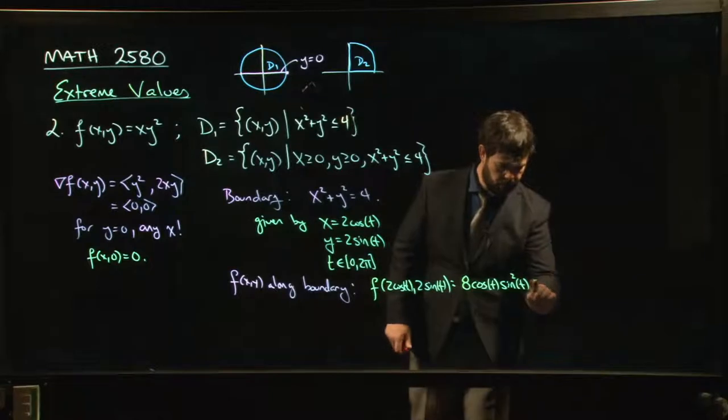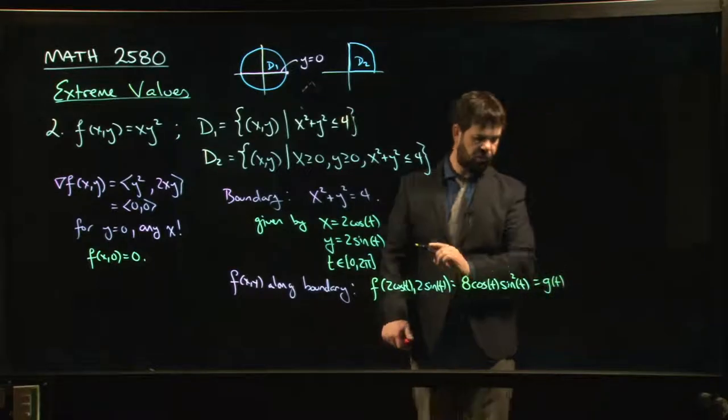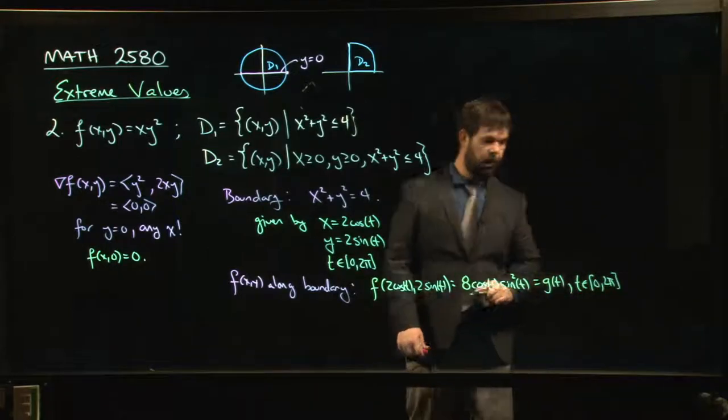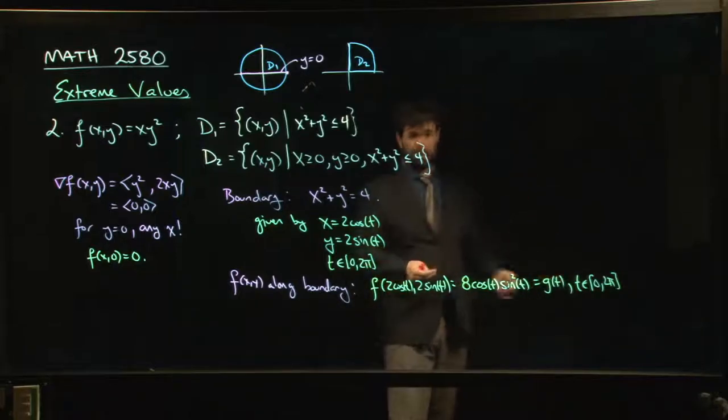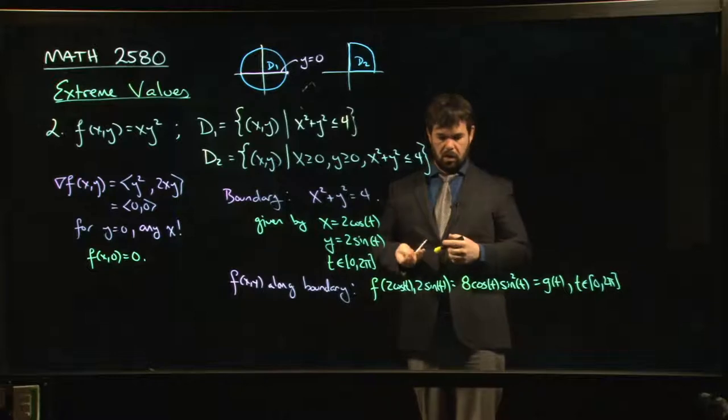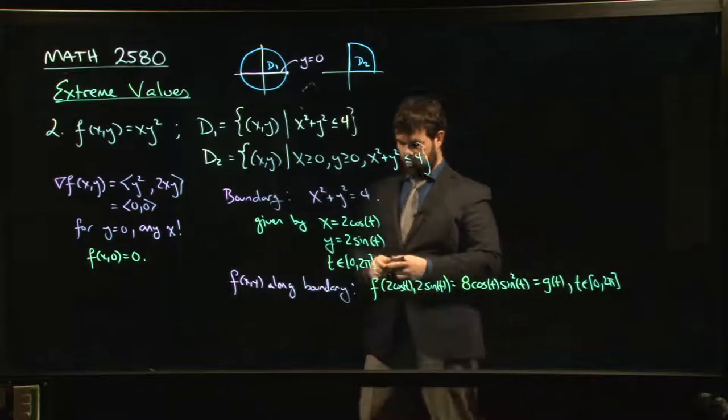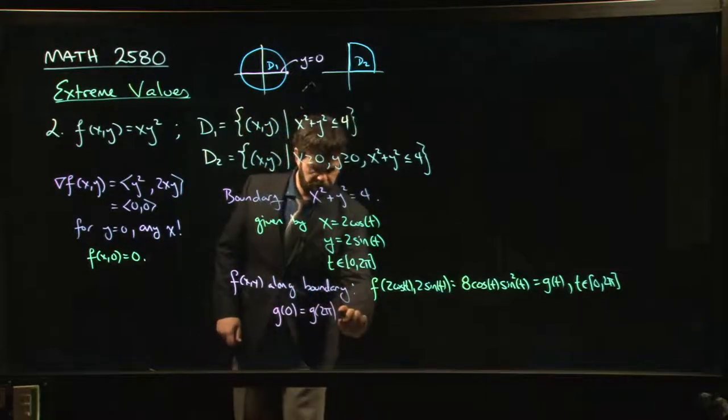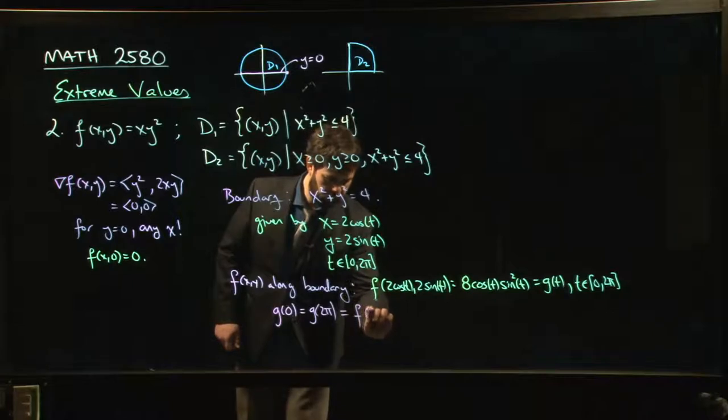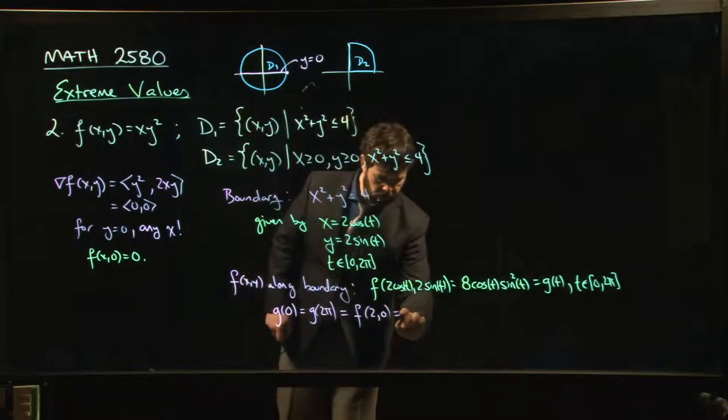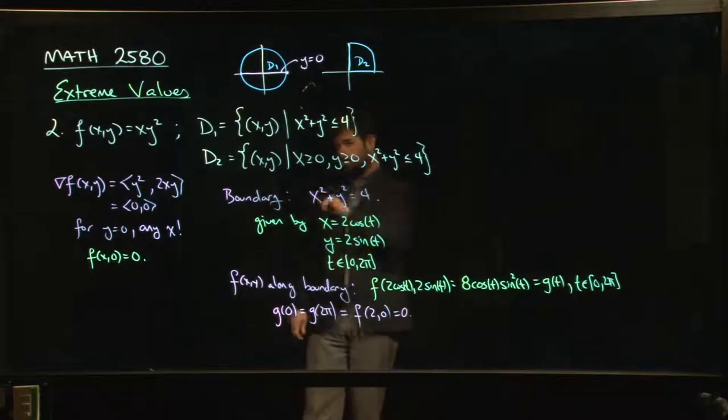So this is now some function of t, and we have an interval, 0 to 2 pi. So once again, we're back in Calc 1, you've got a continuous function, you've got a closed interval. We know how to look for maximum values for continuous functions on closed intervals. What do we do? Well, the first thing we do is we check the end points. And what do we have? So g of 0, and of course, because it's a circle, whether you're at 0 or 2 pi, you're at the point x equals 2, y equals 0. And we know what happens there. We get 0, right? If y is 0, f of x, y is 0.